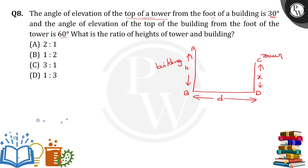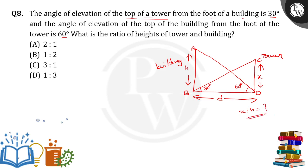This is the distance between the foot of the building and the foot of the tower. From the foot of the building to the top of the tower, the angle of elevation is 30 degrees. From the foot of the tower to the top of the building, the angle is 60 degrees. We have to find the ratio X to H, i.e., the ratio of the height of the tower to the building.